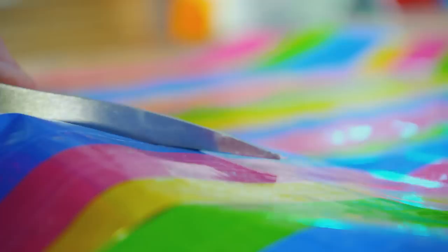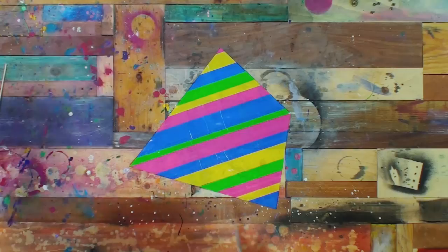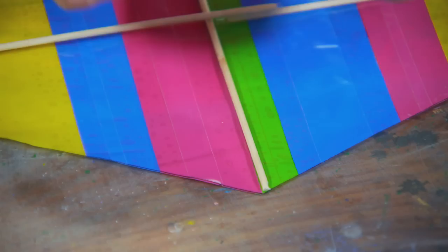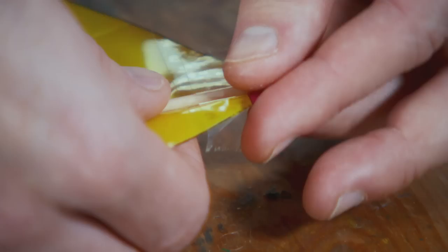There we go. Now I've got this wonderful kite shape. Put my frame back onto it, like that. And with a little bit of sticky tape, I'm going to tape down the frame to the corners. I'm just folding around the edges to make it nice and tidy. And there we go, that is the main body of my kite.